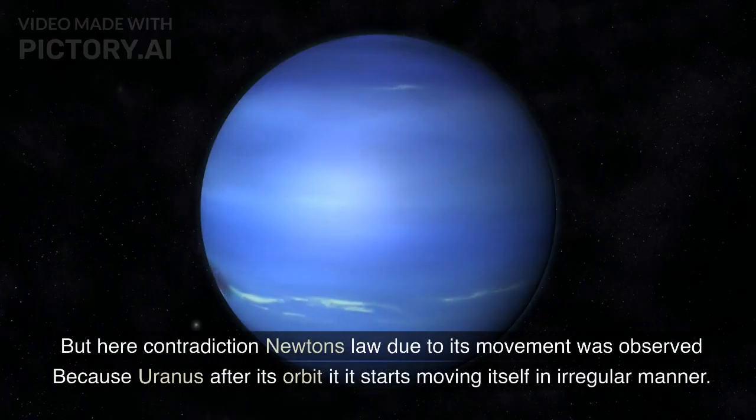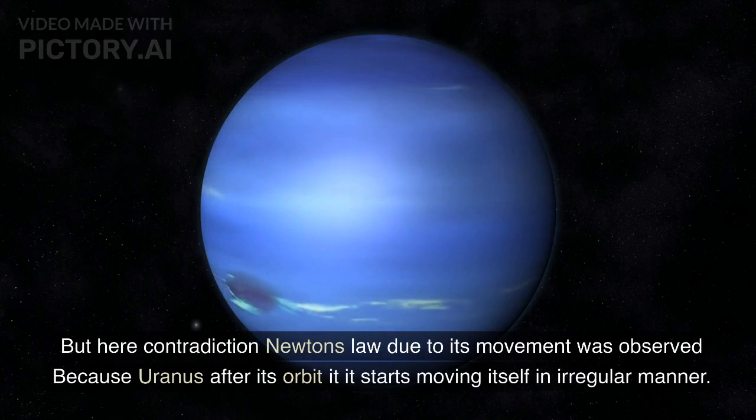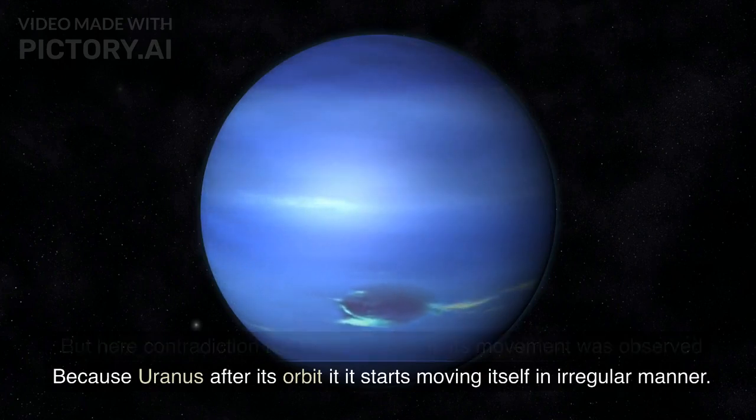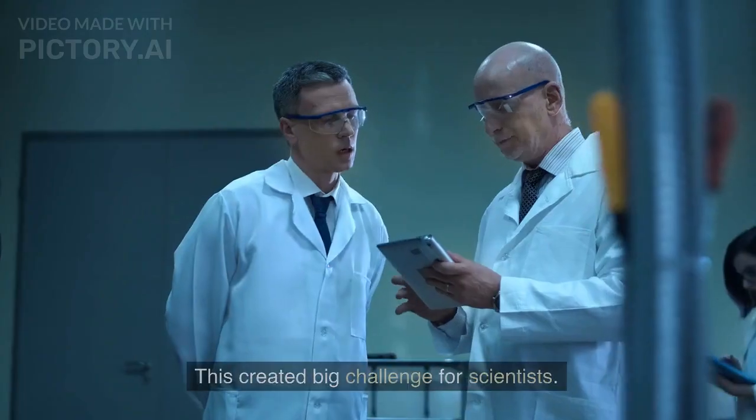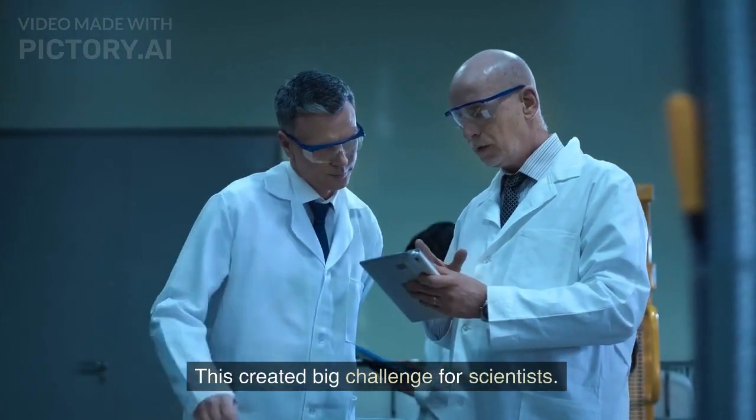But a contradiction to Newton's law was observed due to Uranus's movement, because after its orbit, Uranus starts moving in an irregular manner. This created a big challenge for scientists.